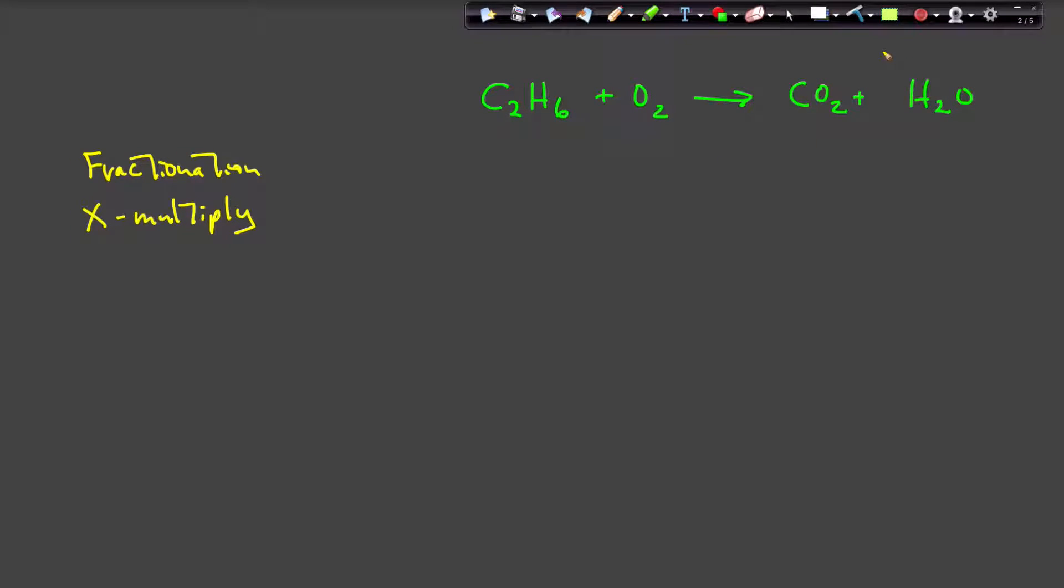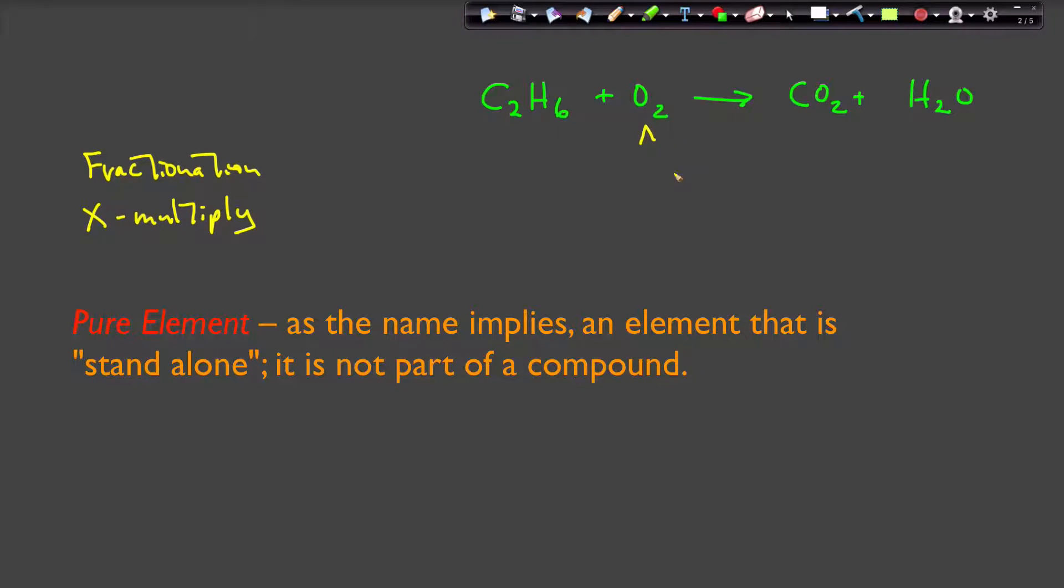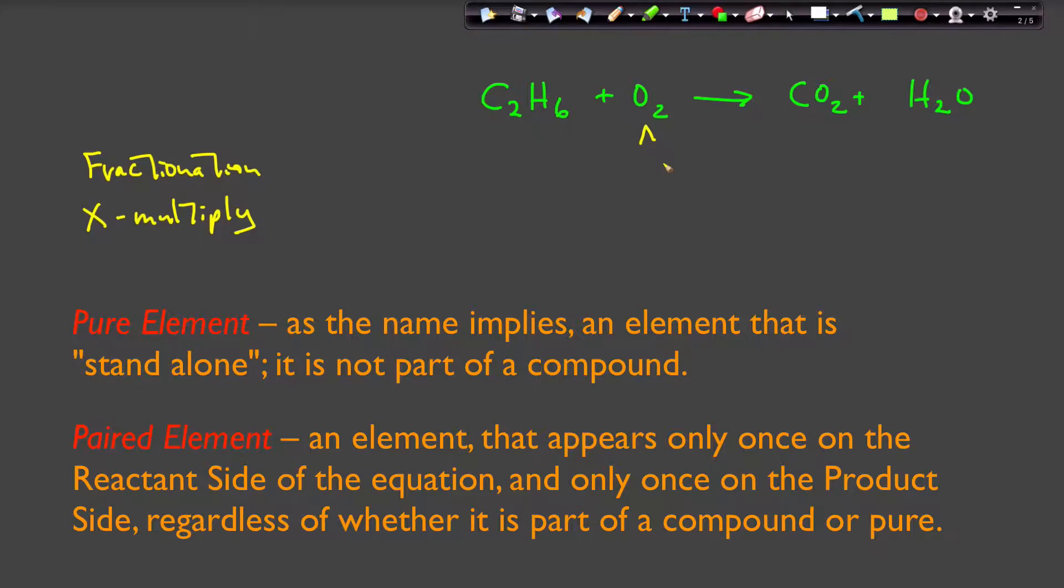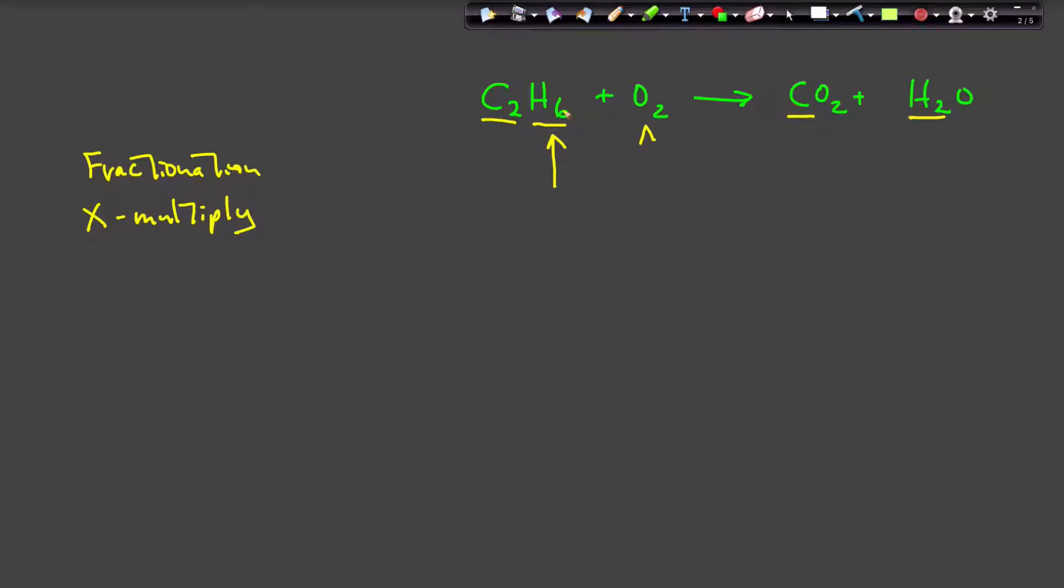Last time, remember, the first thing you're supposed to do is identify any pure elements, and we see oxygen as a pure element. The next step is to identify any paired elements. Paired elements are elements that appear once and only once on each side of the equation. So we first consider carbon, it appears once and only once on each side of the equation, as well as hydrogen. Oxygen appears once on the reactant side and twice on the product side, so it is not paired. We agreed we would start with the paired element with the largest subscript. In this case, the hydrogen in ethane. Let's begin by locking that down at six by putting a coefficient one here.